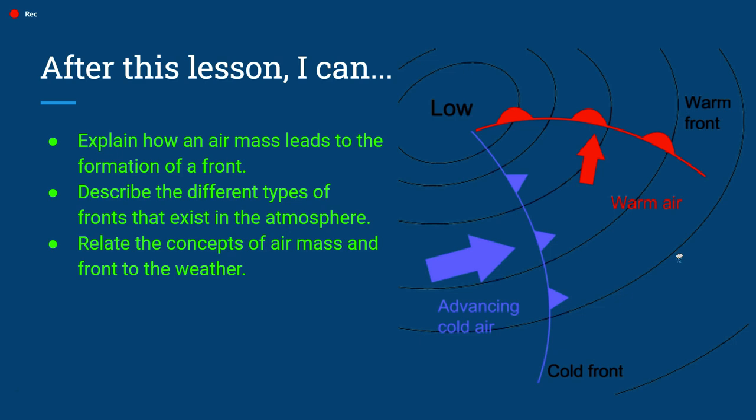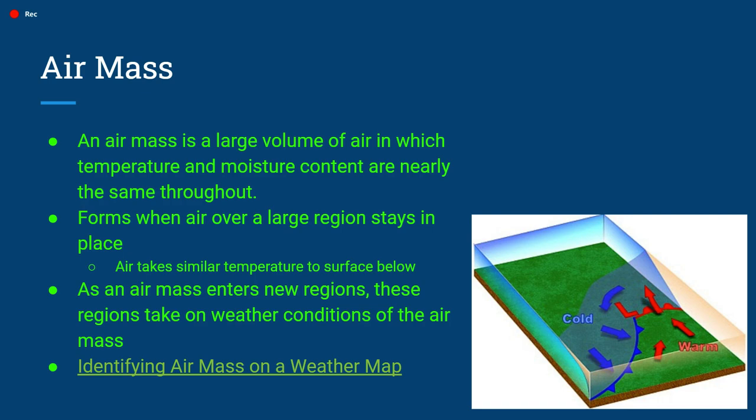After this lesson, I'm hoping you'll be able to explain how an air mass leads to the formation of a front, and also describe the different types of fronts that exist in the atmosphere — you read about this in the article I gave you yesterday. We're going to elaborate on that so you can learn more. Hopefully you'll also be able to relate the concepts of air mass and front to the weather. An air mass is a large volume of air in which temperature and moisture content are nearly the same throughout.